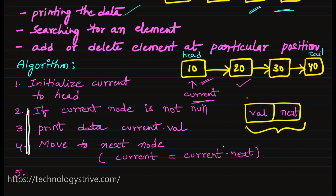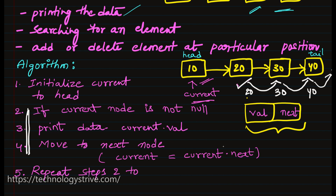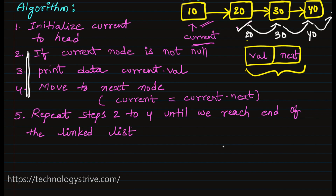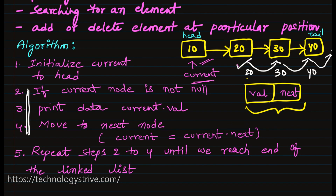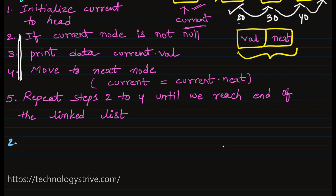Once current points to 20, print 20 and move to the next node which is 30, print 30, move to 40, print 40, then move to next which is null. This process continues until we reach the end of the linked list. So we repeat steps two to four until we reach the end of the linked list. This is the algorithm for traversal.